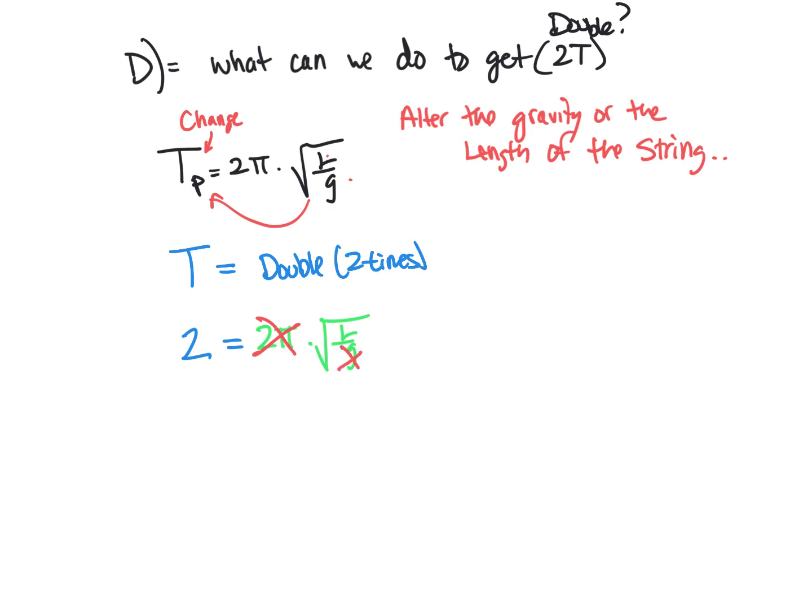That means gravity would be a constant. So we actually get this, 2 is equal to the square root of L. So that means our L would be equal to 4. So how you get that is, remember, when you square both sides to get rid of that, you get to square this 2.